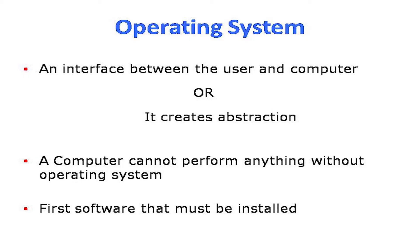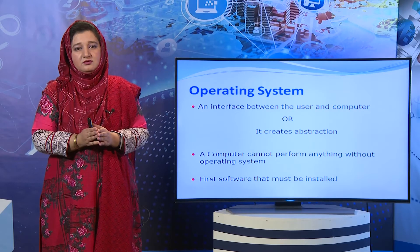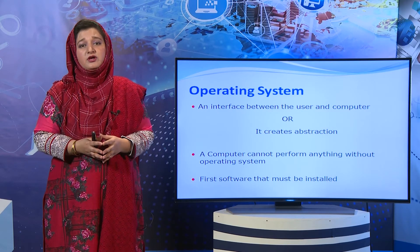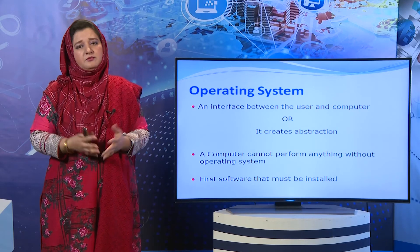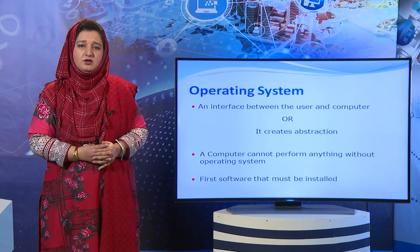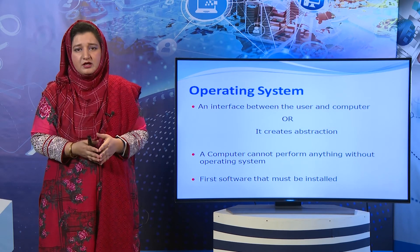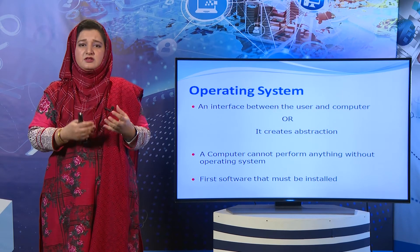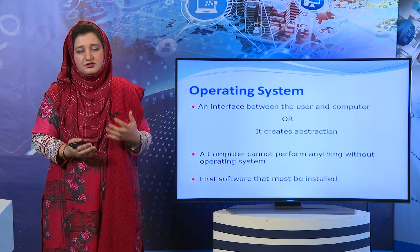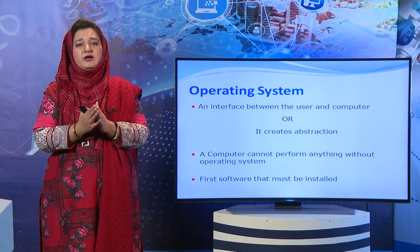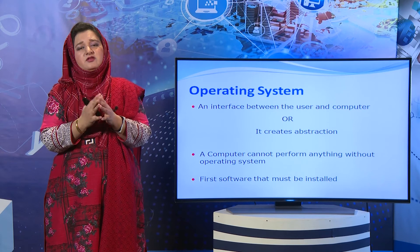یہ hardware related operations کا user کے ساتھ concern نہیں ہوتا — operating system ایک abstraction layer develop کرتا ہے between the user and the computer. کوئی بھی machine operating system کے بغیر کام نہیں کر سکتی. Computer جو ہے وہ operating system کے بغیر بالکل بیکار ہے. Desktop computers، laptops، mobile phones — ان سب کے اندر کوئی نہ کوئی operating system موجود ہوتا ہے. اگر operating system نہ ہو تو devices ہمارے لیے بالکل بے جان اور deaf and dumb devices ہو جائیں گی۔